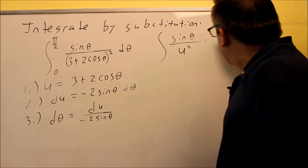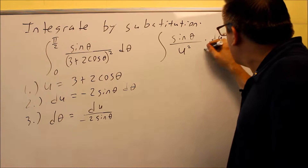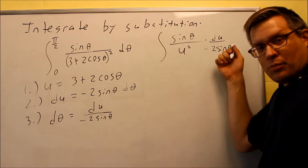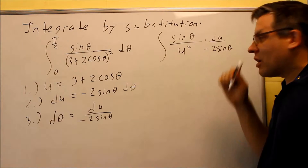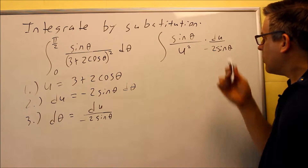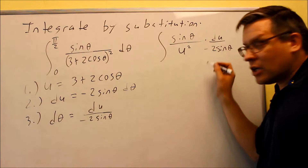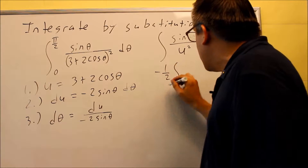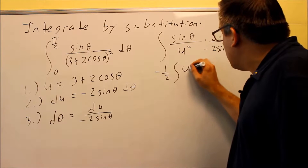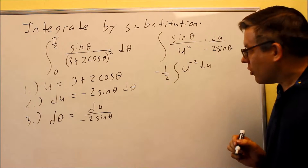The d theta gets replaced with du over negative 2 sine theta. By substituting that in, you should get everything to cancel out — you should only have u's left over, and that does happen here. The two sine thetas cancel, and there's a negative 2 on the bottom, which means you can put a negative one-half on the outside of the integral sign.